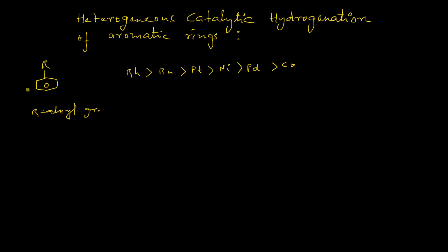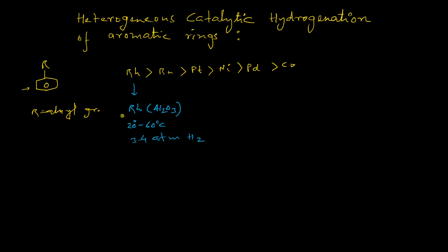This is the general order of reactivity for selective hydrogenation of aromatic compounds or aromatic substituents in presence of other functional groups. Rhodium is used as rhodium on alumina. The optimum reaction conditions for this catalyst are 20°C to 60°C temperature and 3 to 4 atmospheric pressure of hydrogen gas — very mild reaction conditions compared to other catalysts like nickel.